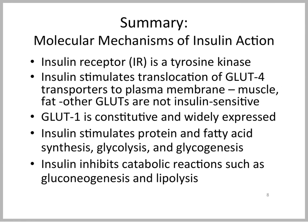So, in summary, insulin acts through an insulin receptor in some cells, which is a tyrosine kinase. Insulin stimulates translocation of GLUT4 transporters to the plasma membrane. These insulin-dependent glucose transporters are found primarily in muscle and adipose tissue.